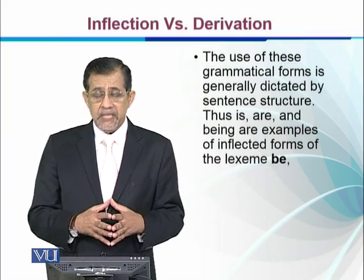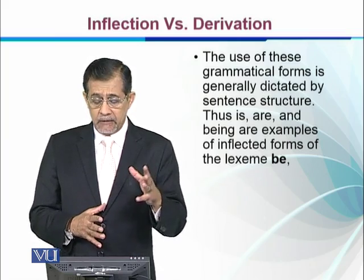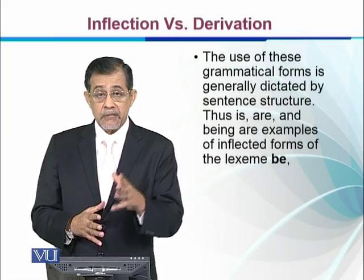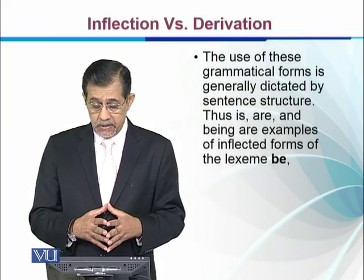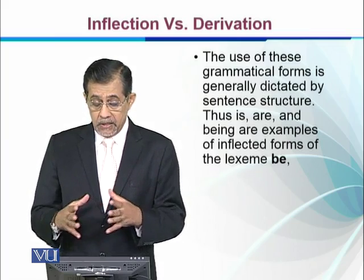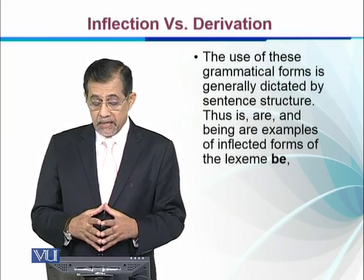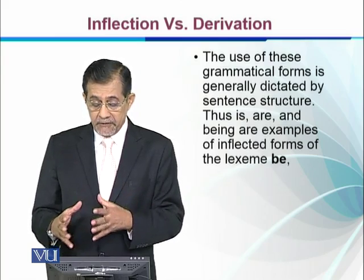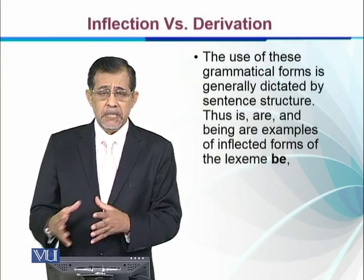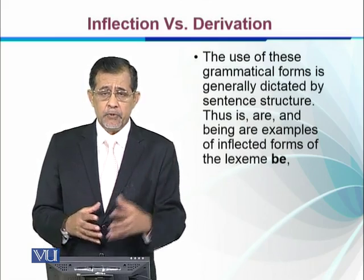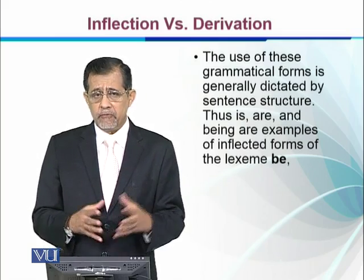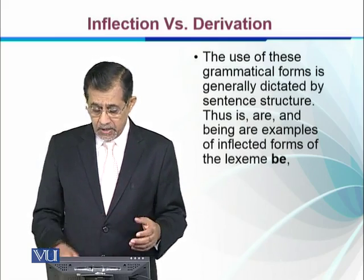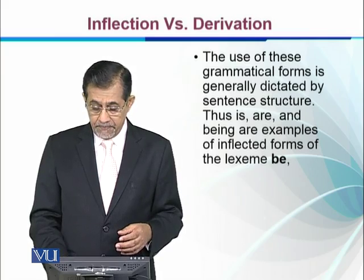The use of these grammatical forms is generally dictated by sentence structure and what it requires. Thus, 'is', 'are', and 'being' are examples of inflected forms of the lexeme 'be' — the verb to be — which has forms such as 'is', 'are', and 'am'.